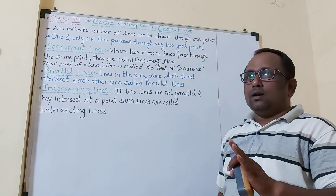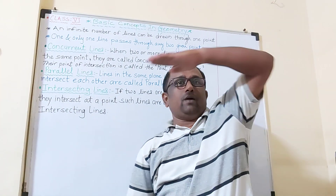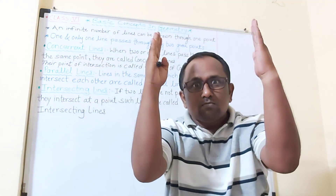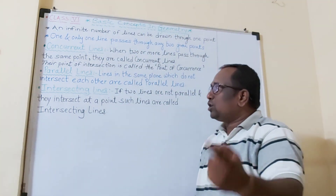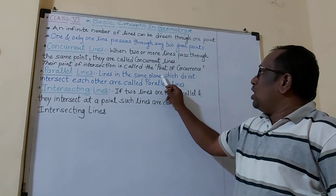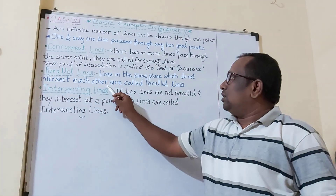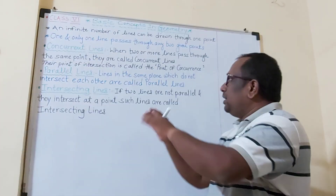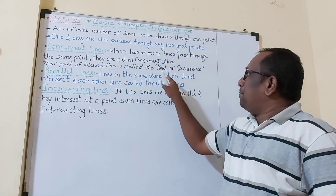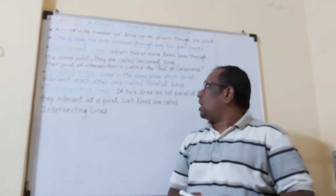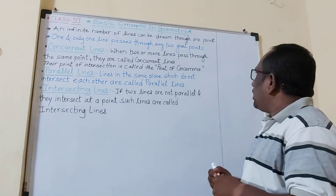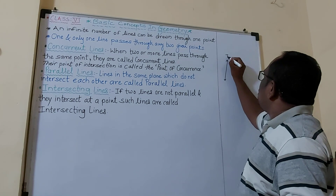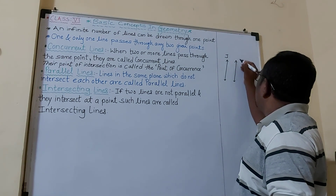Now we move to the next type: parallel lines. For example, my two hands held out like this are parallel. The definition is: lines in the same plane — plane meaning a flat surface, not an aeroplane — which do not intersect each other are called parallel lines. For example, I draw line J and line P here.